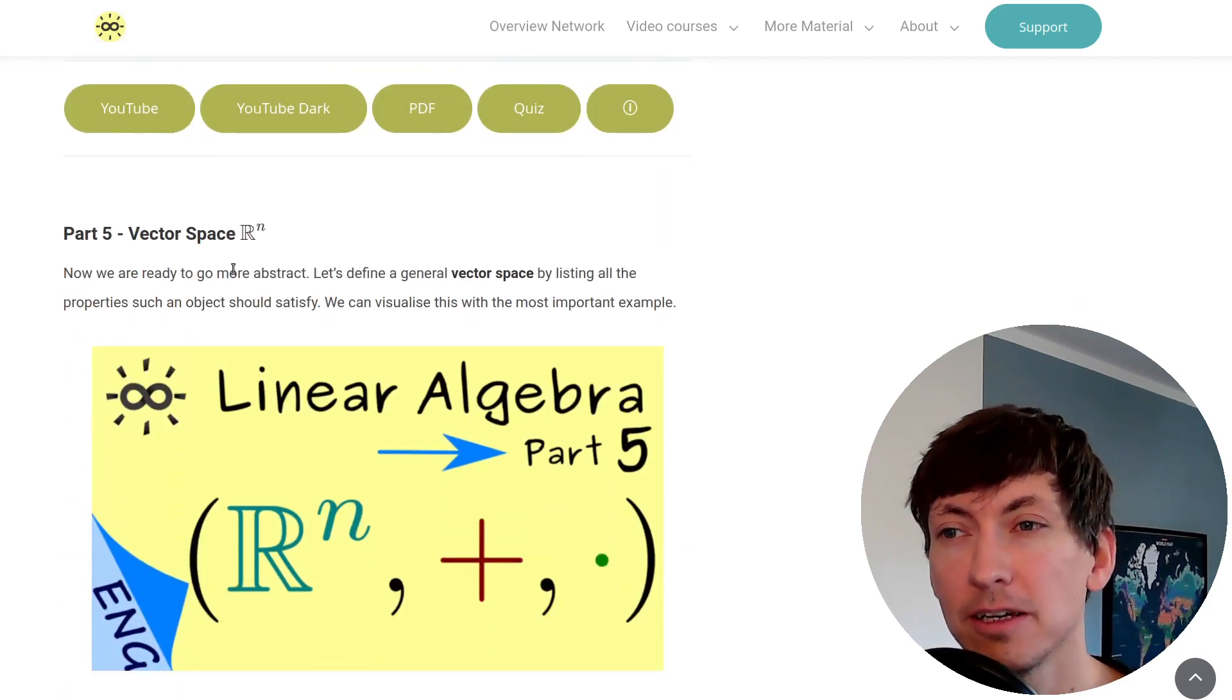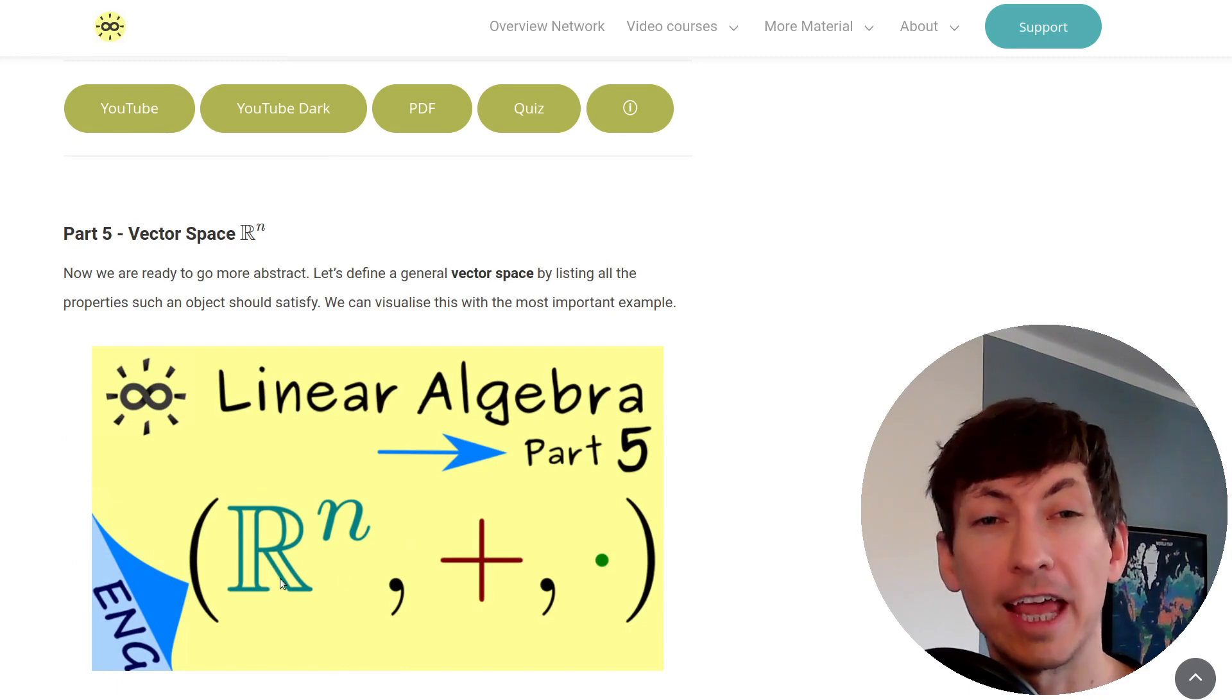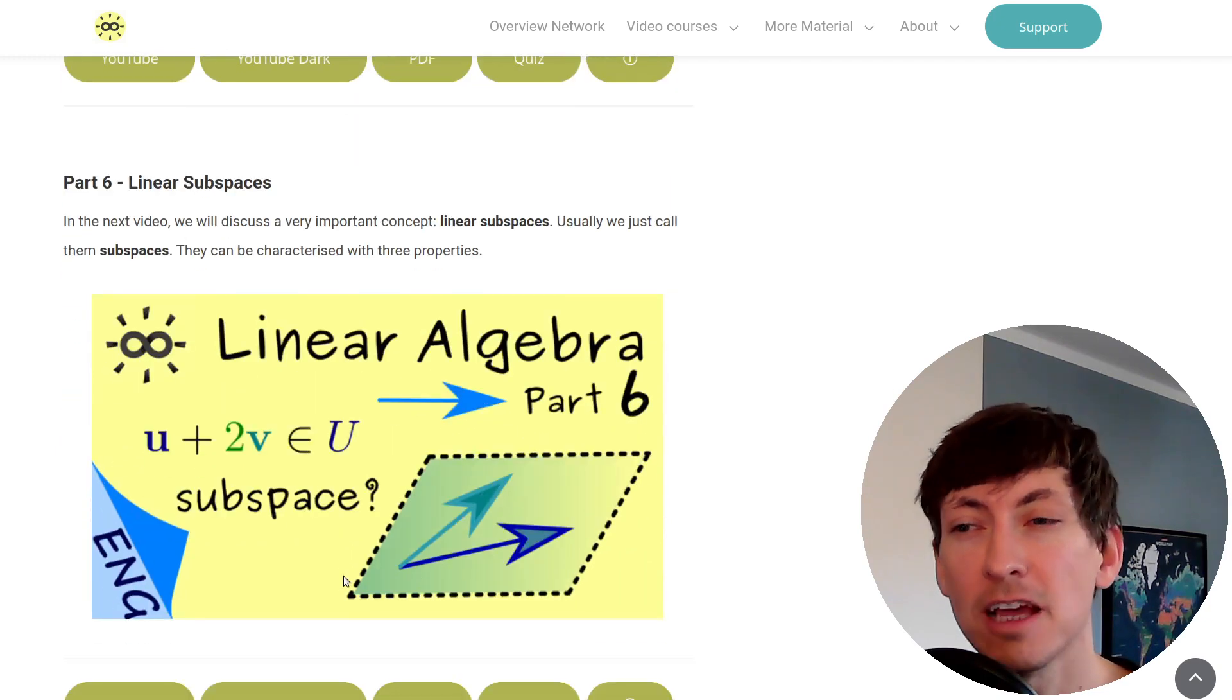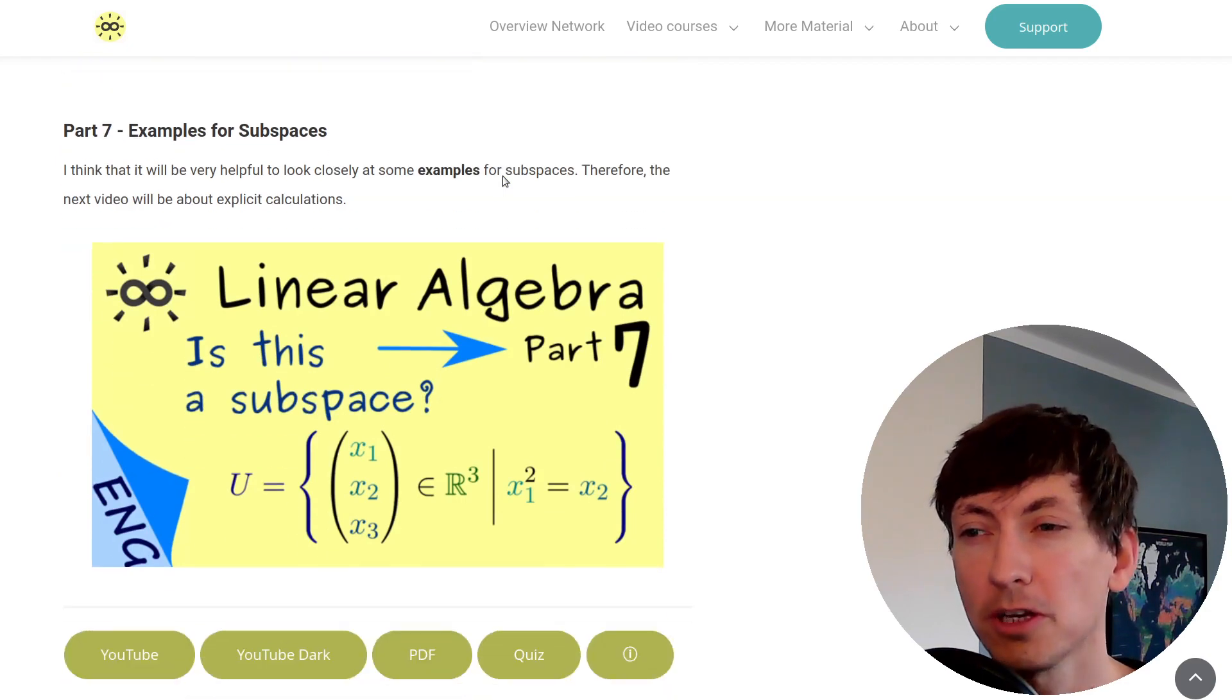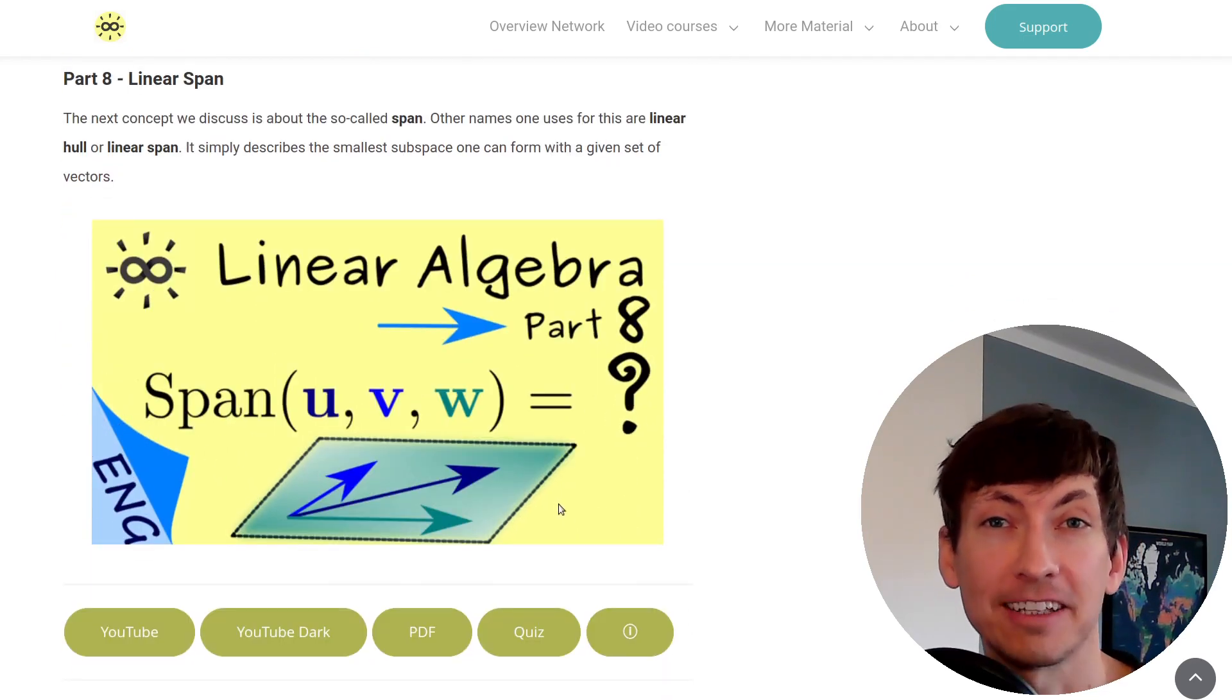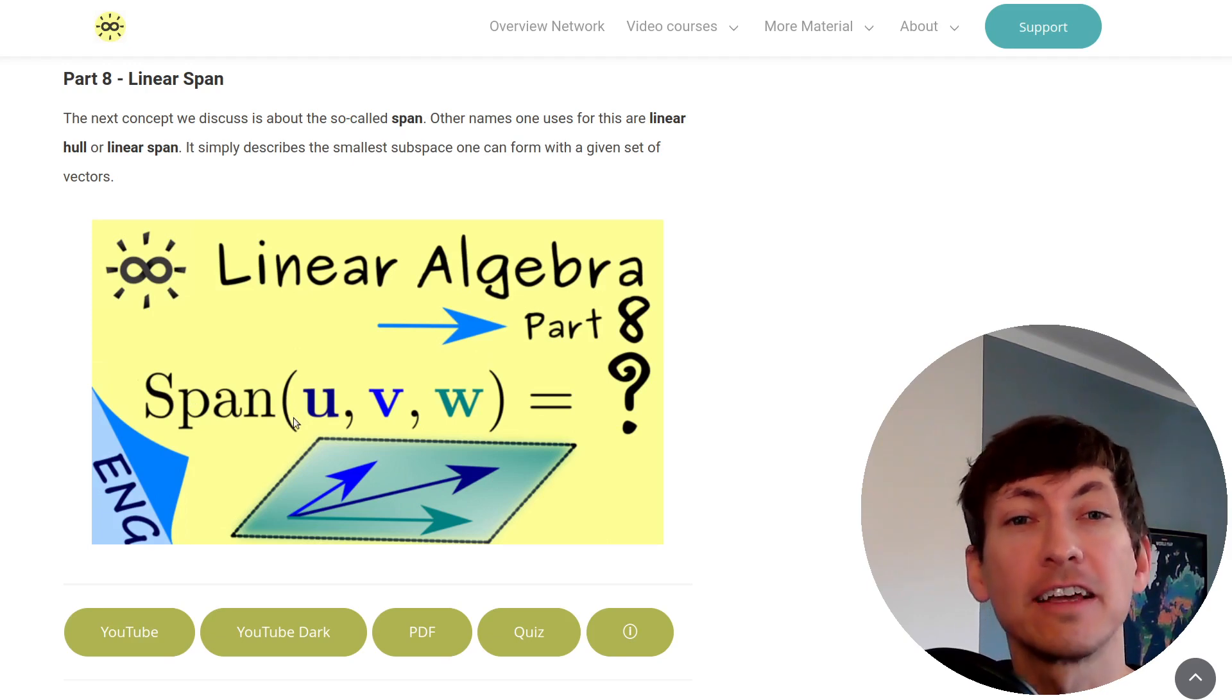In the next video you see we finally start with the vector space Rn, so there we have the general vector calculations with n components. Then we are ready to define more objects, more notions in linear algebra. For example, in the next one we will define so-called linear subspaces. Part 7 is very important for your learning because there I will describe a very concrete example of such a subspace in Rn. After knowing what a subspace in Rn is, we can also define the notion of the span of vectors. This is not so complicated - this is the general thing we use to define subspaces. We say we have vectors and they span a subspace.